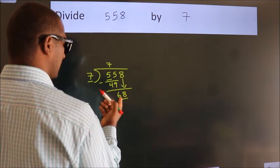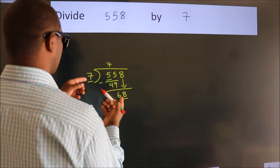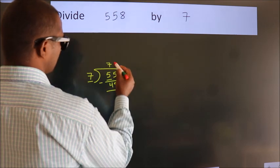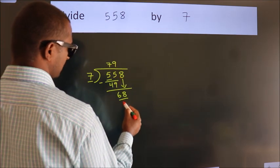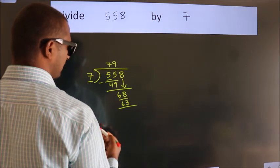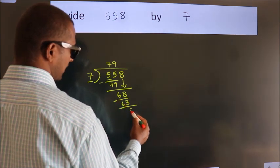So 68. A number close to 68 in 7 table is 7 nines, 63. Now we subtract. We get 5.